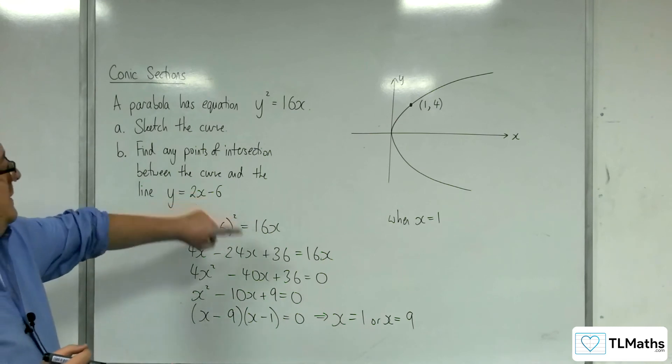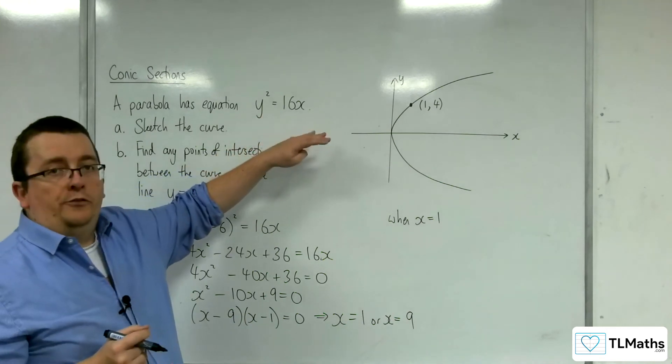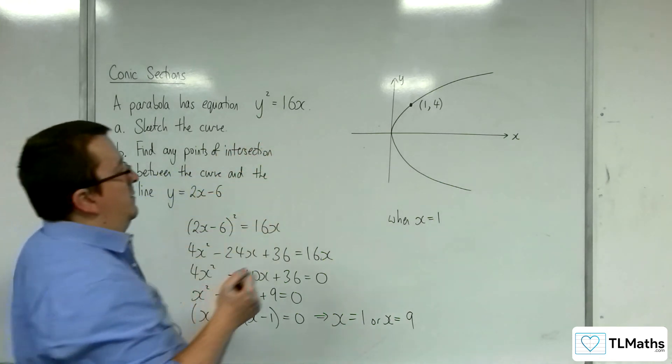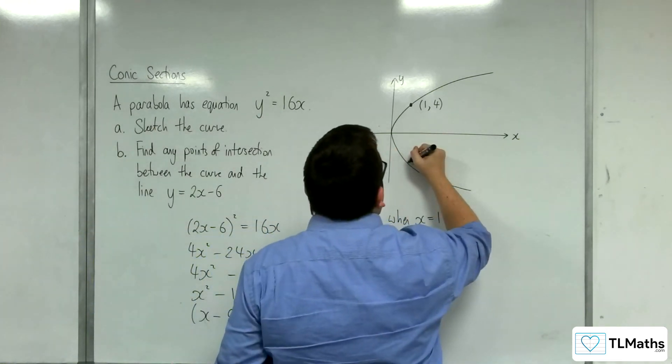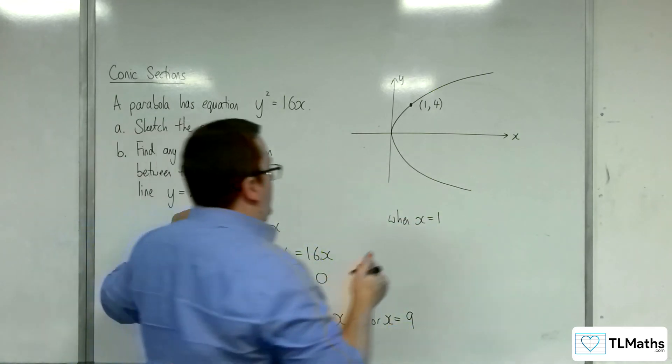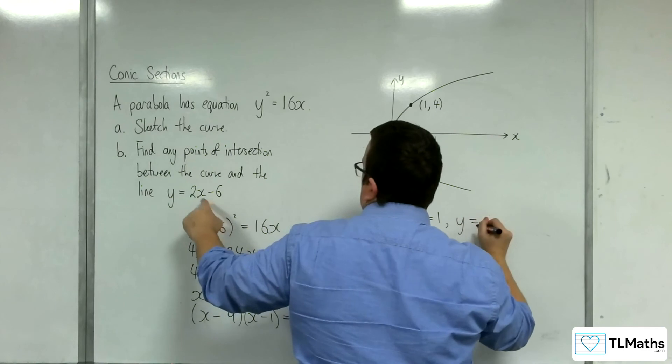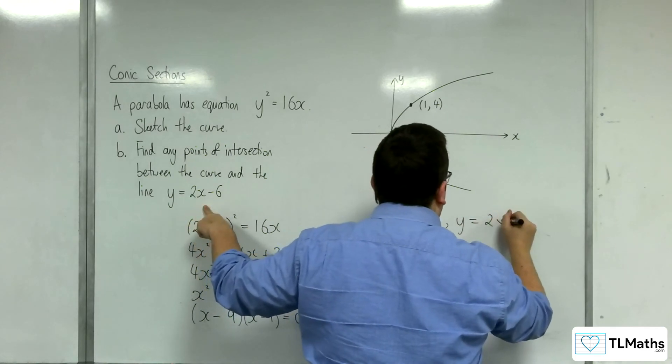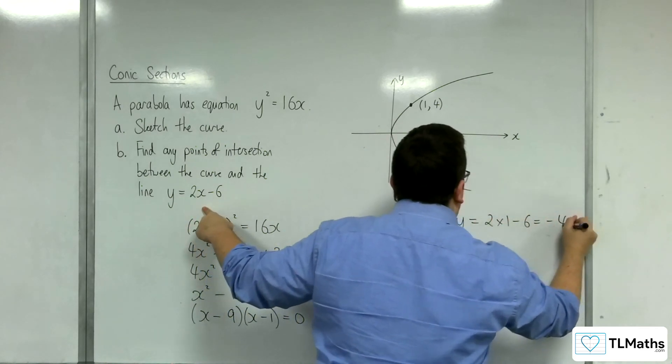So substituting them into the line, because otherwise we get the plus minus 4. So there is this other point down here, 1 minus 4. So just be a little bit careful. So x equals 1, substituting into the line, so 2 lots of 1 take away 6 is minus 4.